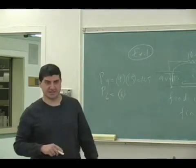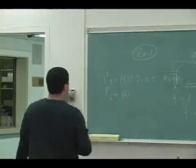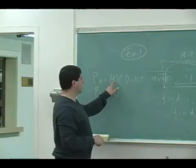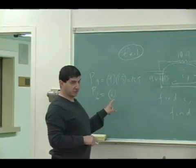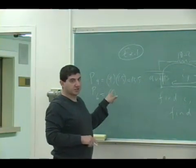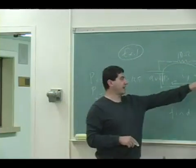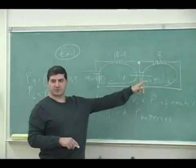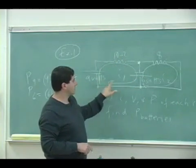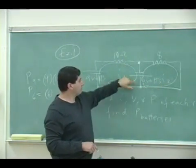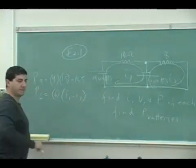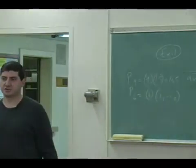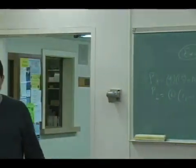Okay, power produced by the 9-volt battery is 9 times 1.5, 13.5 watts. Power produced by the 6-volt battery is 6 times the current going through the 6-volt battery. What's the current going through the 6-volt battery? It's I1 and then I2. So it's I1 minus I2. It's the current going through the 6-volt battery.